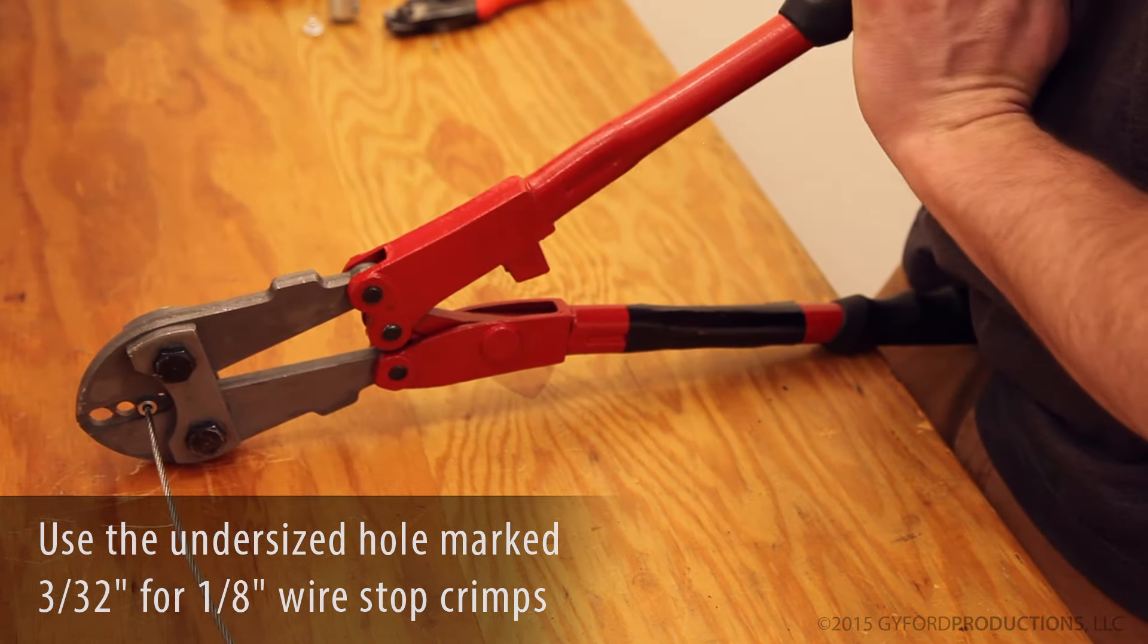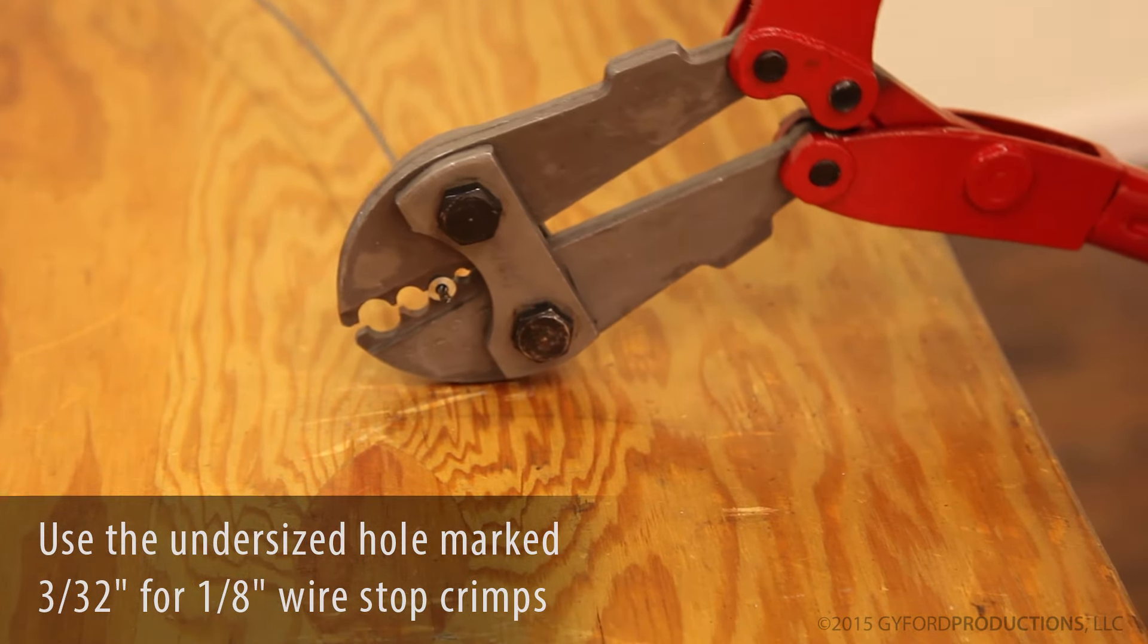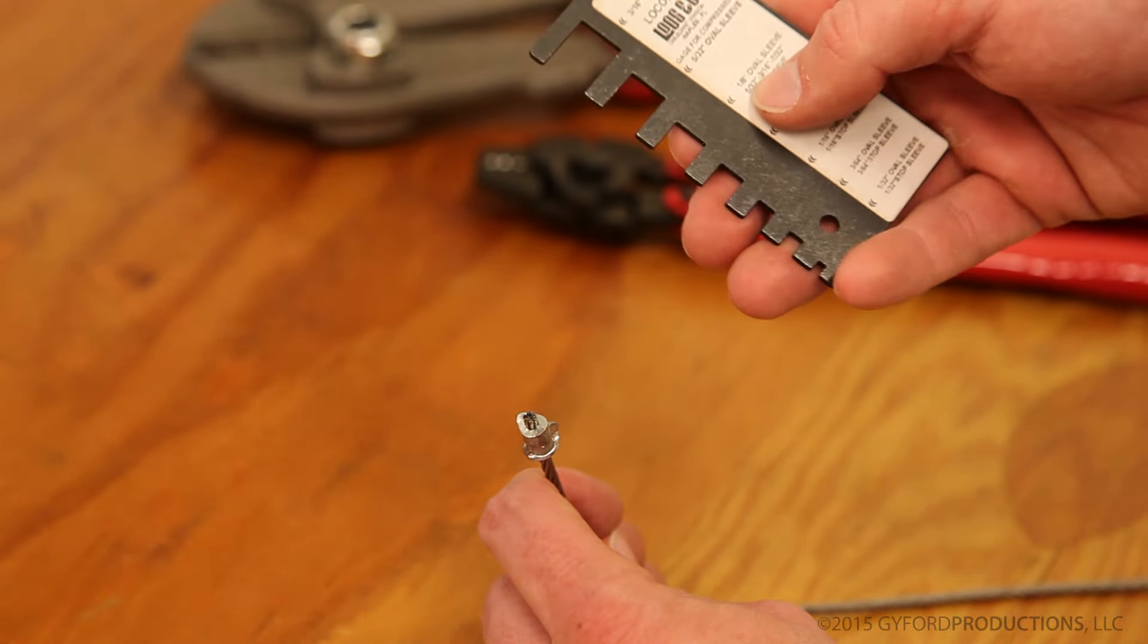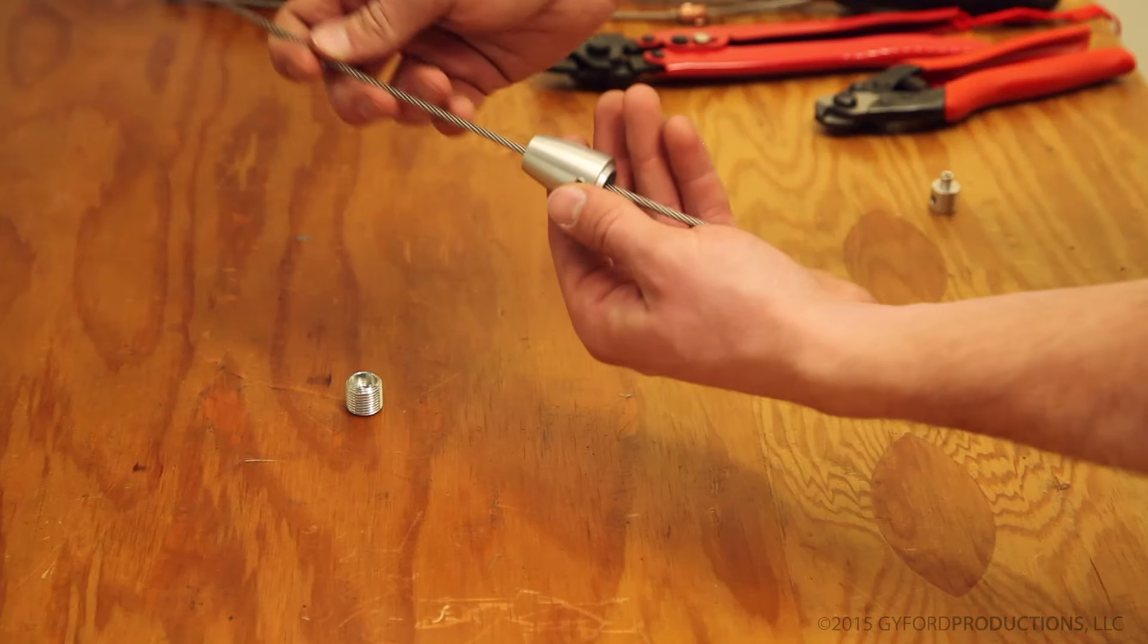Crush the swage on the upper half, turn it 180 degrees, and crimp it again on the lower half. Then you'll use the supplied gauge to make sure the swage has been crushed enough to ensure maximum hold.